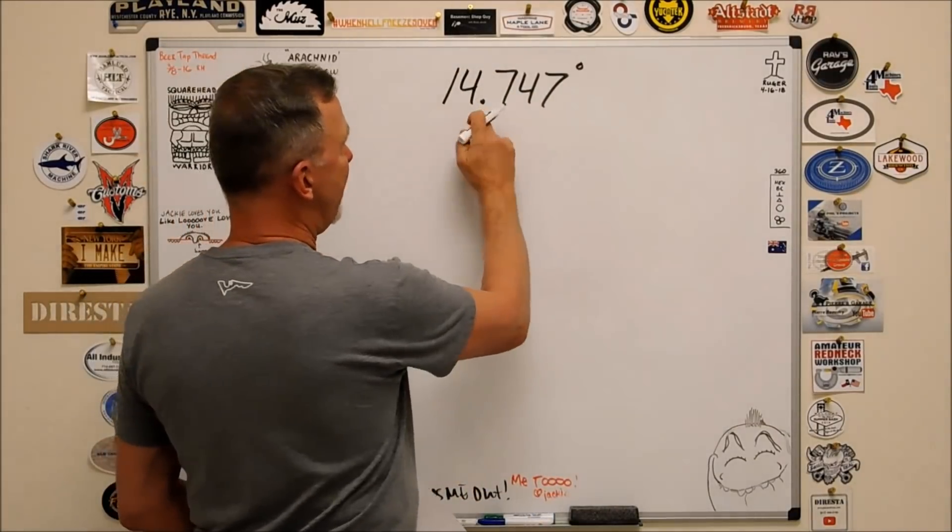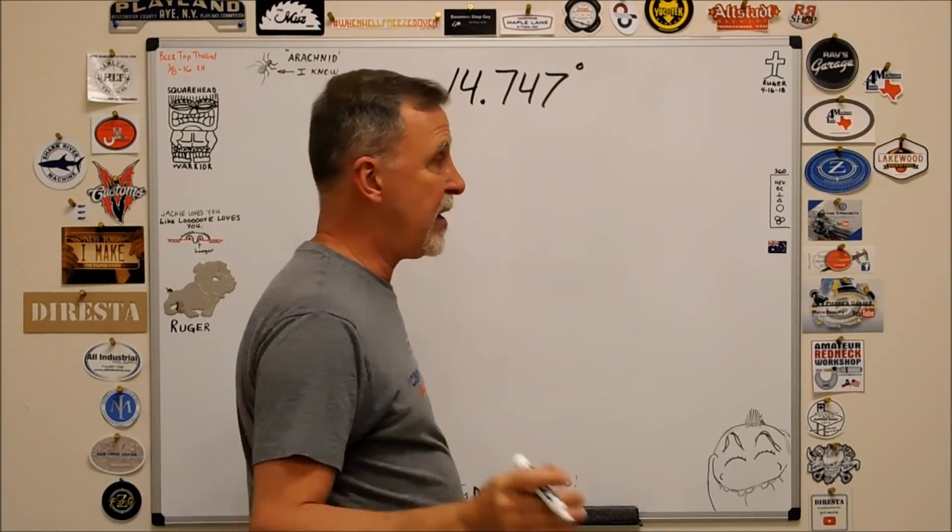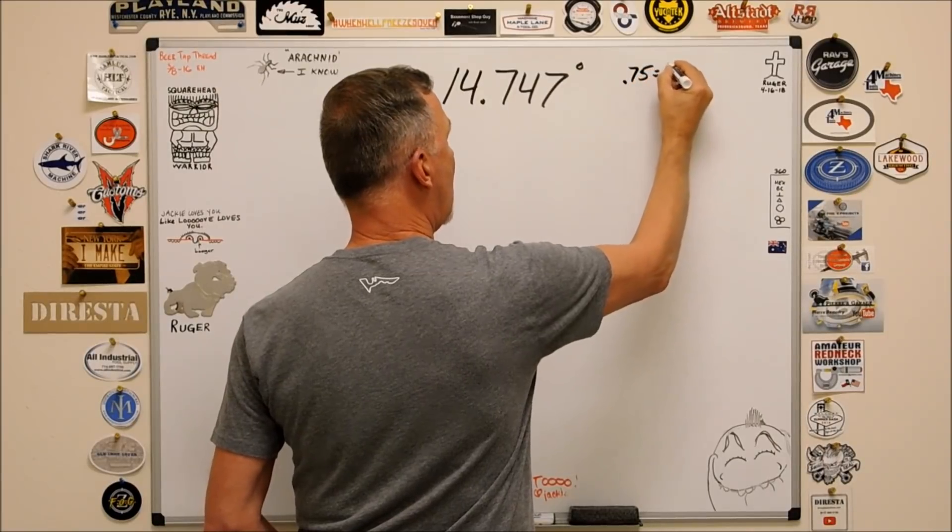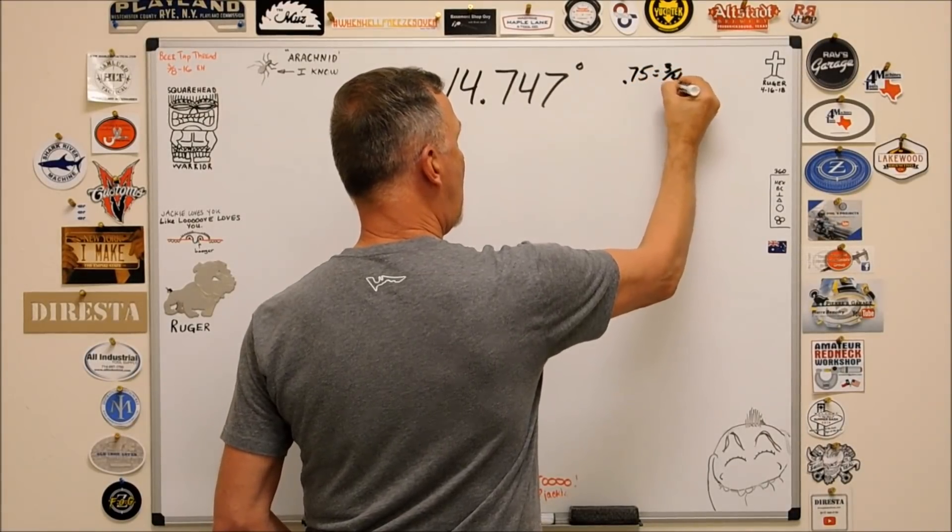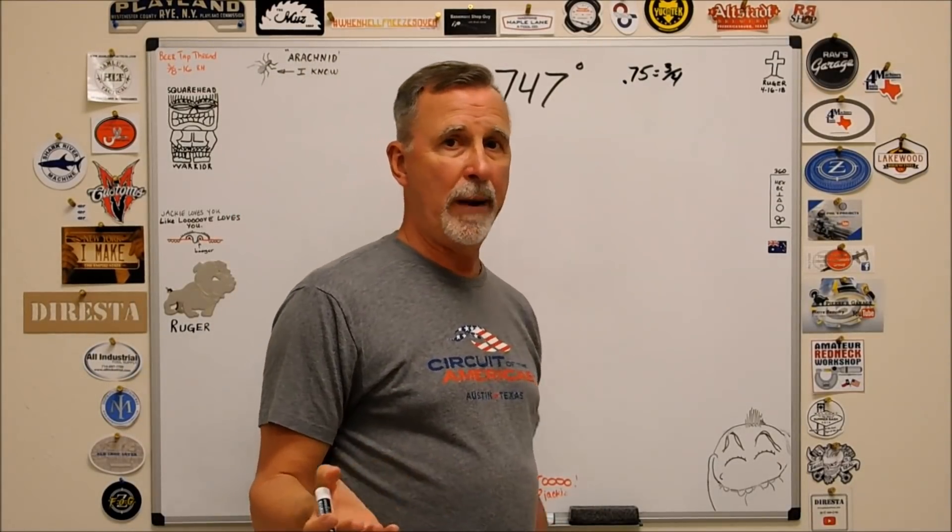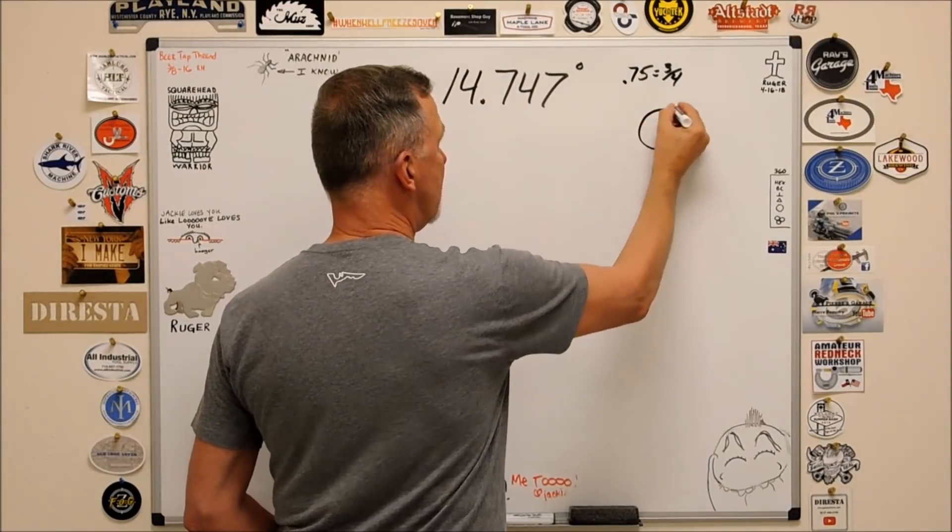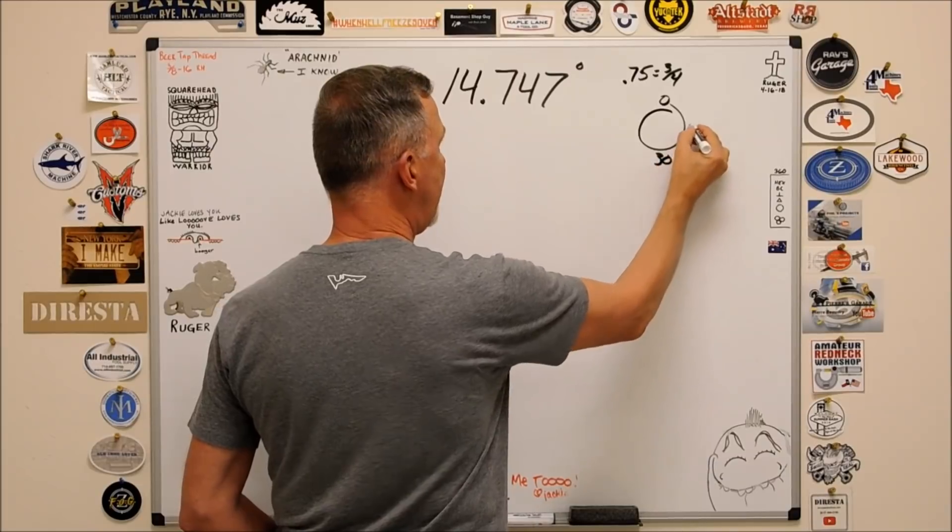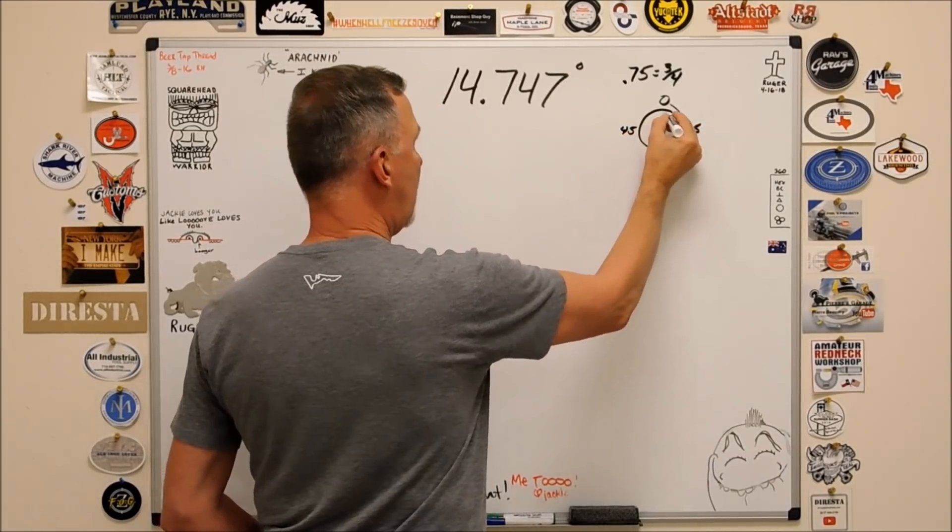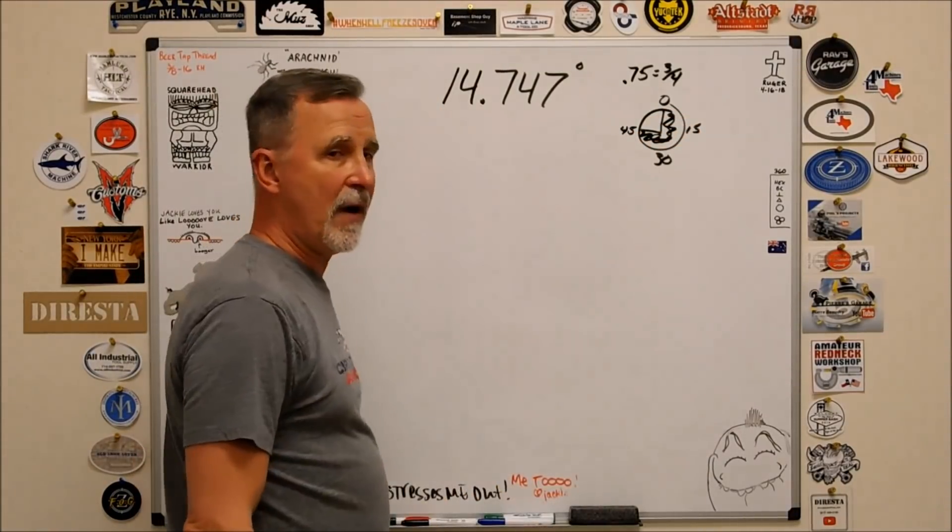Point seven five, if there was a decimal, it would be three quarters, right? Three quarters of sixty minutes would be what? Zero, thirty, fifteen, forty-five. Forty-five minutes. Just a good rule of thumb.